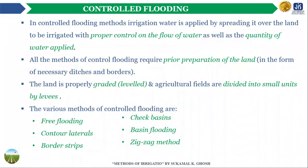In the controlled flooding method, irrigation water is applied over the land with proper control on the flow of water, unlike uncontrolled flooding. In controlled flooding, there is also proper control on the quantity of water applied. The land is properly graded and leveled, and the agricultural fields are divided into small units by levees, borders, or strips.